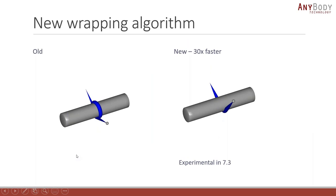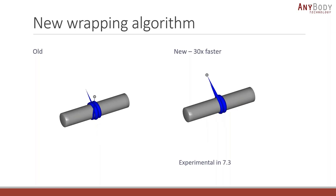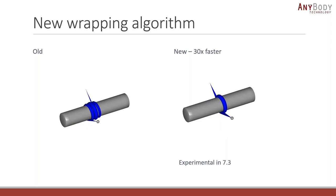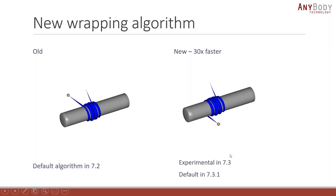This new wrapping algorithm is much, much faster than the old one. The old algorithm had the problem that the more contact points were in contact with the wrapping surface, the slower it went. The new one doesn't have that issue at all. In a case where it wraps around a cylinder many times, the new algorithm is almost 30 times faster. The new algorithm was an experimental option in version 7.3, but it has become the default in the release we made yesterday.